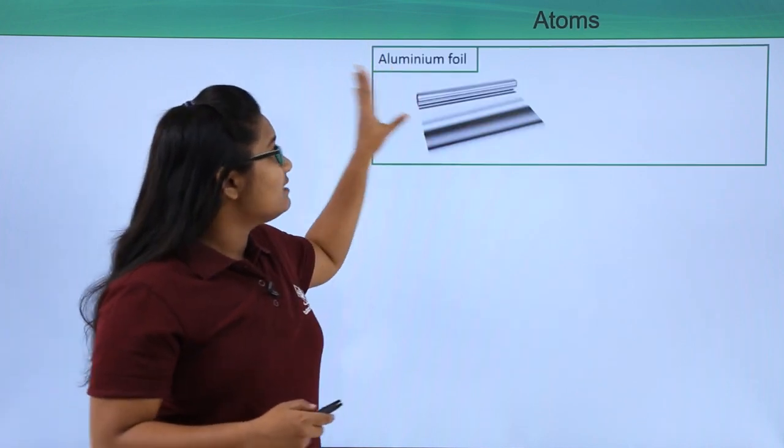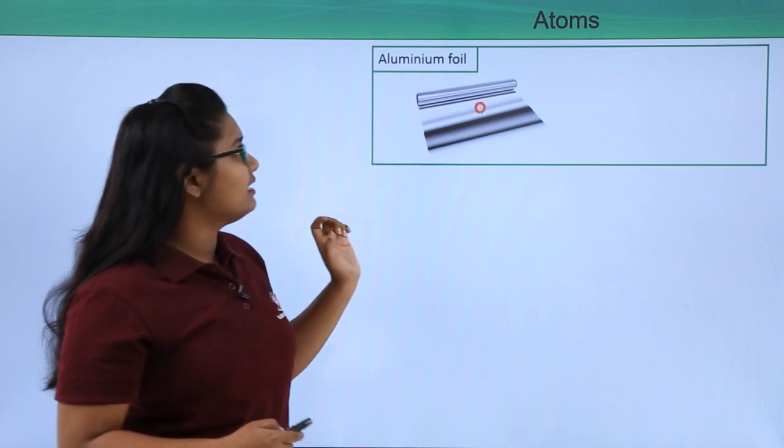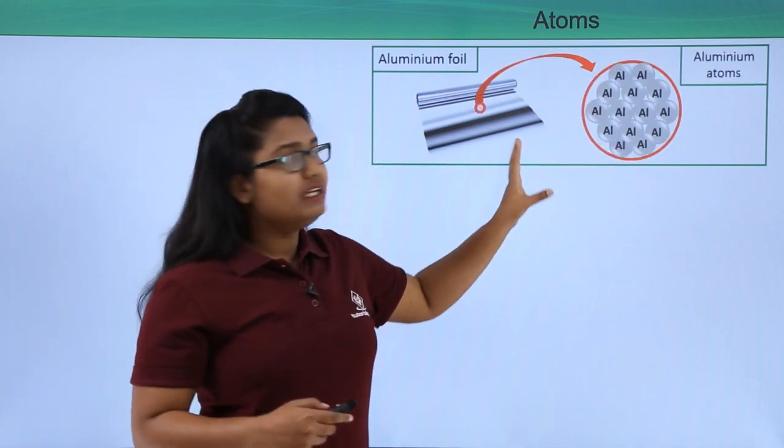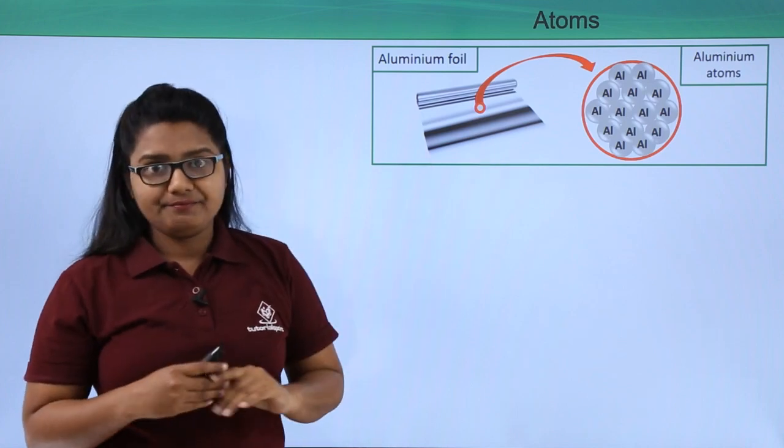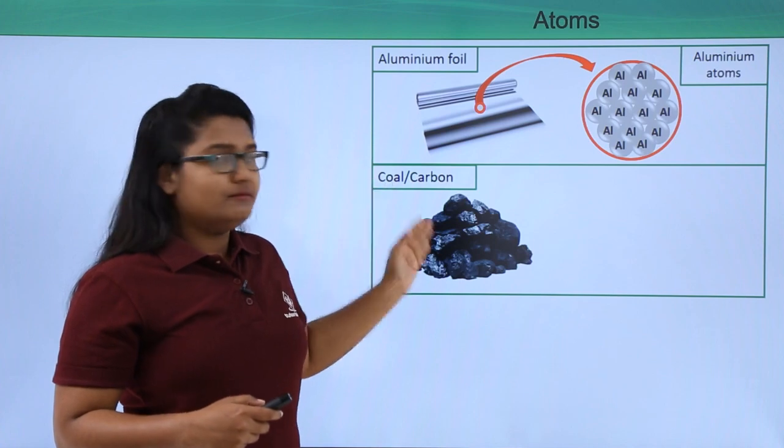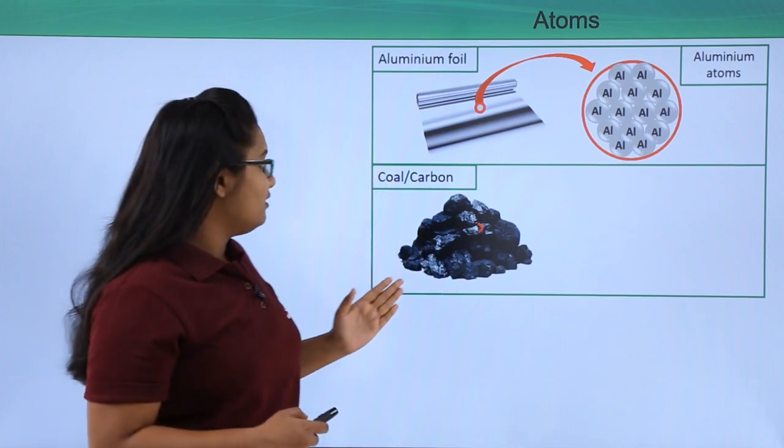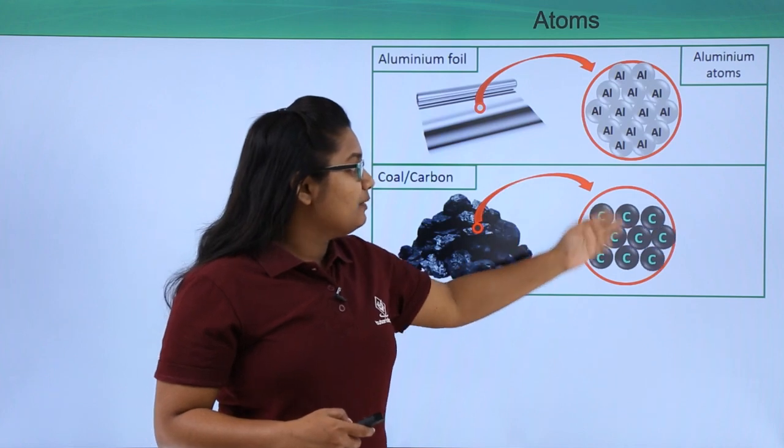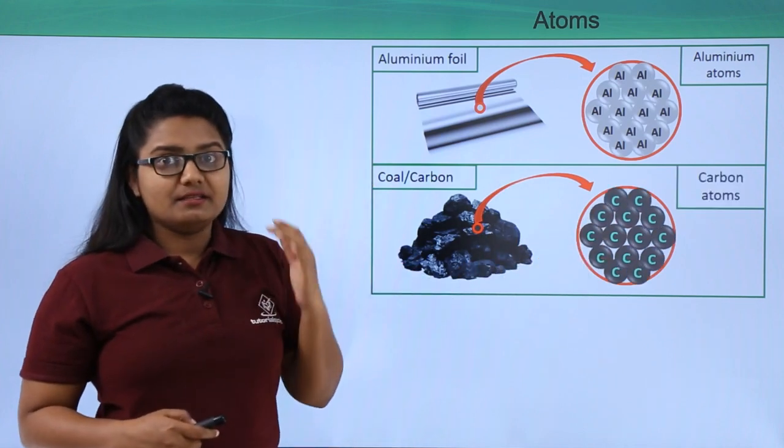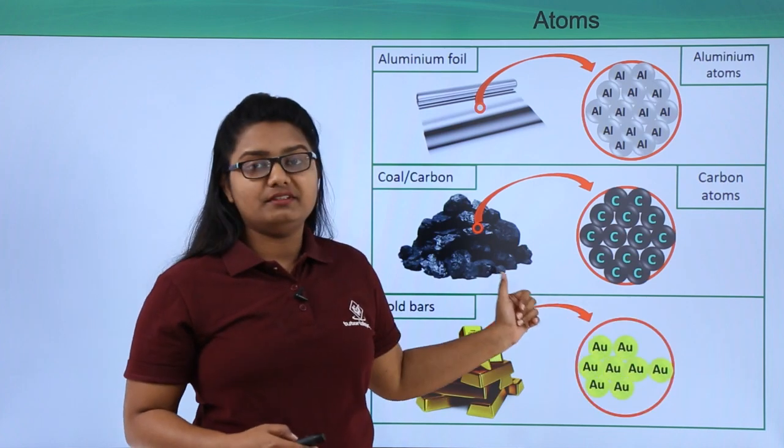Let's look at this aluminum foil. When we zoom in a small part of this aluminum foil, we find a bunch of aluminum atoms sticking together. Similarly, a coal piece which is made up of carbon is made up of carbon atoms. Similarly, the gold bars are made up of gold atoms.